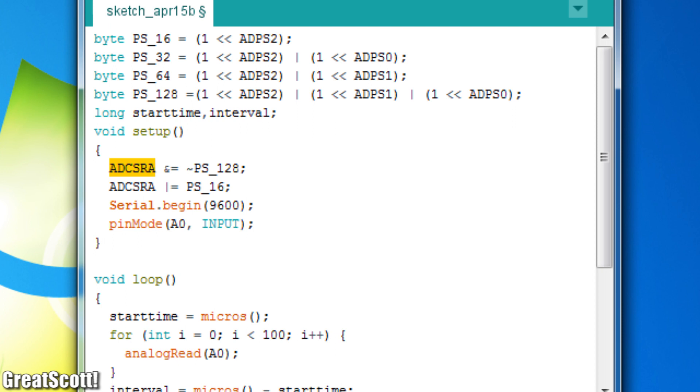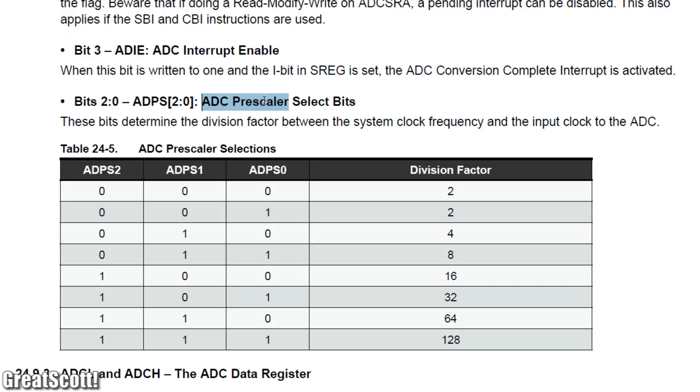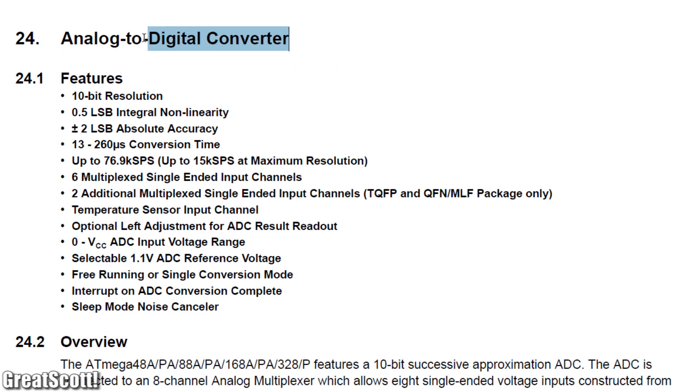Apparently we want to modify the register ADCSRA, which can be found as always in the datasheet. As some of you might already have thought the bits 0 to 2 are once again used to set a prescaler. This time of the ADC.